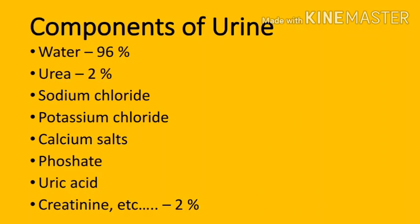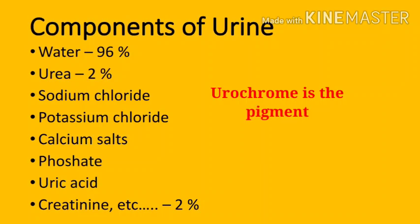Now let us see what are the components of urine. About 96% of urine is composed of water, and 2% is composed of urea. The remaining 2% is composed of sodium chloride, potassium chloride, calcium salt, phosphate, uric acid, and creatinine. The pigment present in urine is known as urochrome, and it gives yellow color to the urine.